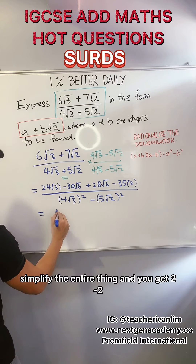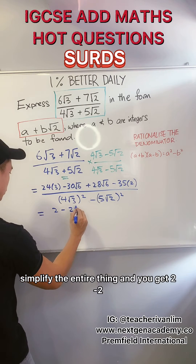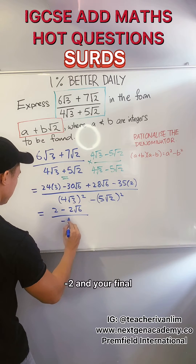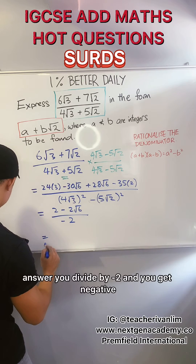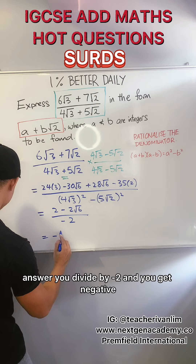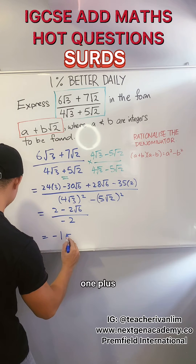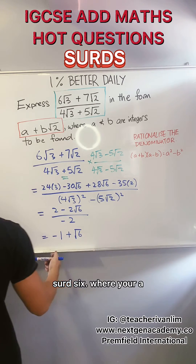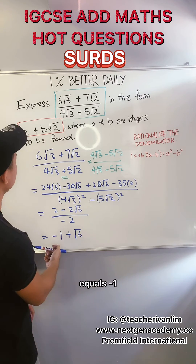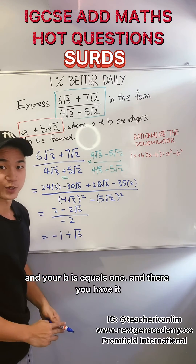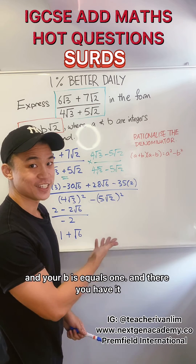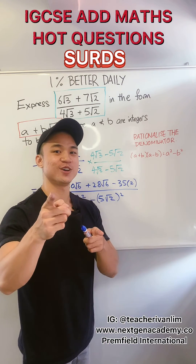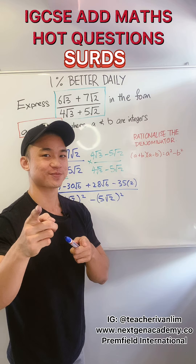Simplify the entire thing and you will get 2 minus 2√6 over negative 2. Your final answer: divide by negative 2 and you get negative 1 plus √6, where a is equal to negative 1 and b is equal to 1. And there you have this hot question for surds — I'll see you in the next class.